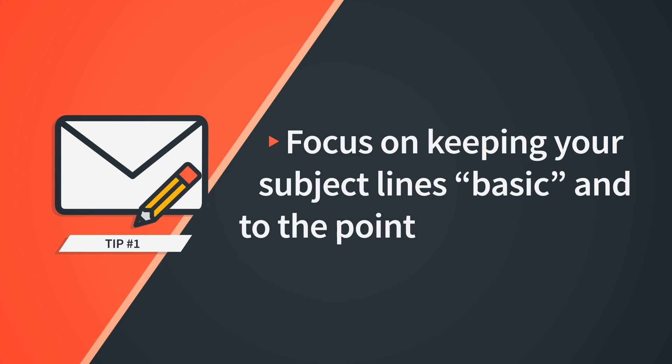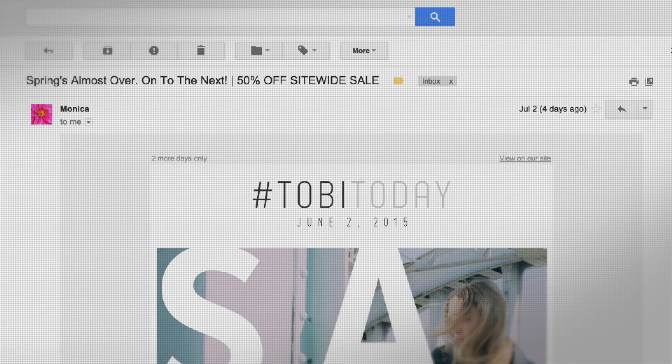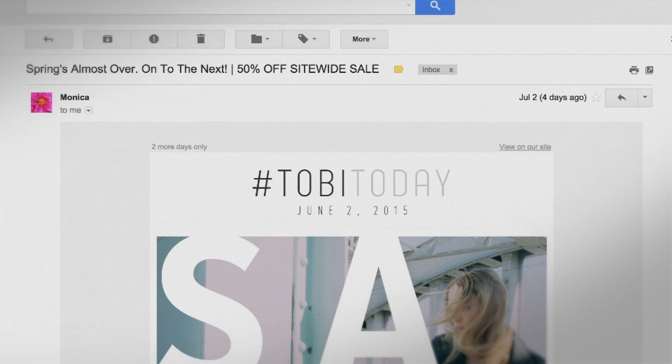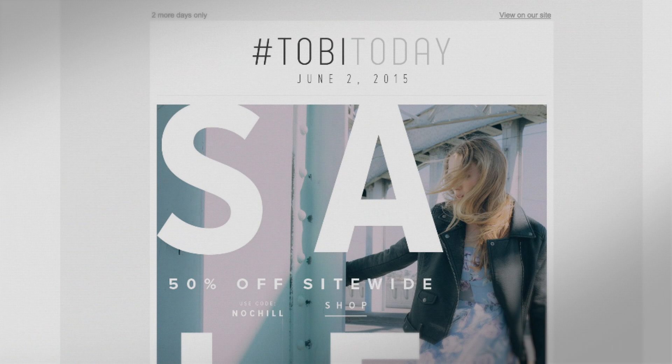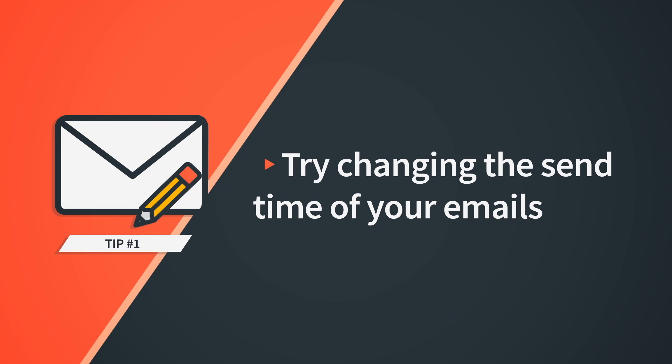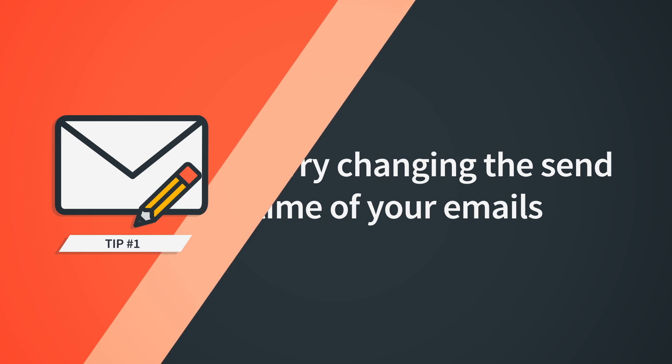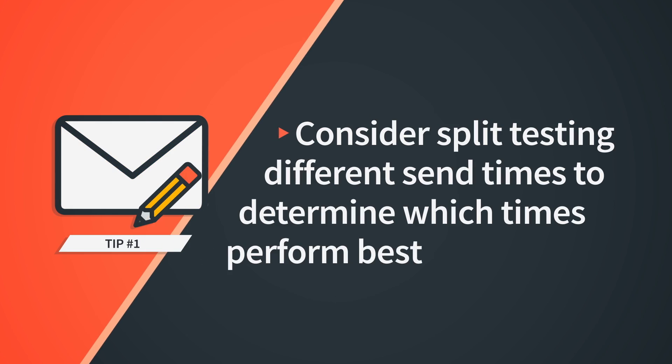While these subject lines show off your creative side, they often don't tell your subscribers what the email is actually about. Instead, focus on keeping your subject lines basic and to the point — like "Spring's almost over, on to the next, 50% off site-wide." And basic isn't so bad when it comes to emails. You could always throw in an emoji or a symbol to add some fun. Also, try changing up the timing of your emails. Maybe your subscribers prefer emails at 8am instead of 6pm, or vice versa. You'd be surprised how that can impact your open rate. And to find out which days and times get the most opens, consider split testing different options.